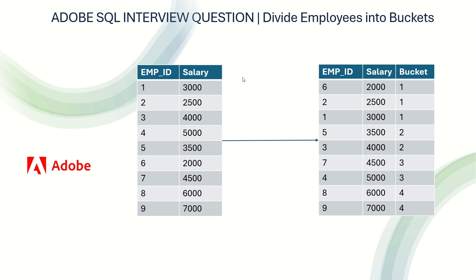Greetings everyone, welcome back to my channel Data Sculptor. Today we are going to see another interesting SQL question. You have a table called employees with columns employee ID and salary, and you have nine employees and their salaries. The output requires you to add a column called bucket and categorize or divide the employees into buckets based on salaries in ascending order.